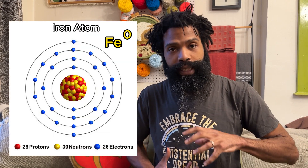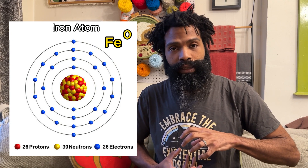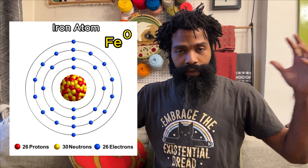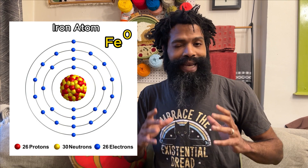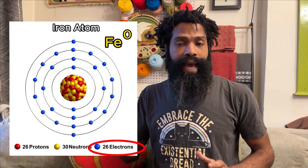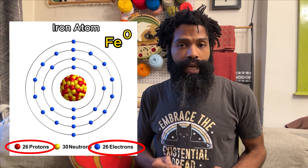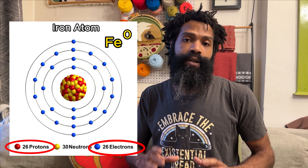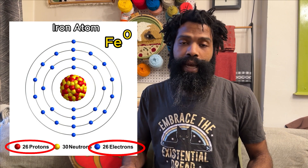The body stores iron in the +3 form — kind of like little balls of rust inside your body — and then converts it back to the +2 form when needed. So you might ask: if we need the +2 form, why put elemental iron in food? It helps to understand what these oxidation state numbers mean. Quick refresher: atoms have a nucleus with protons and neutrons, and electrons buzzing around in orbitals.